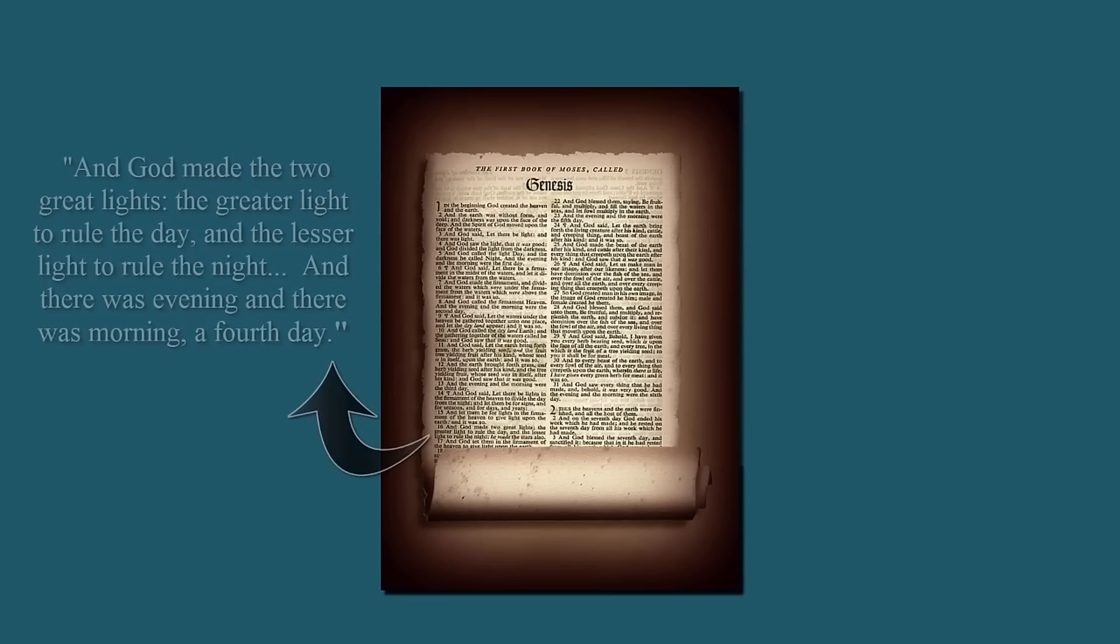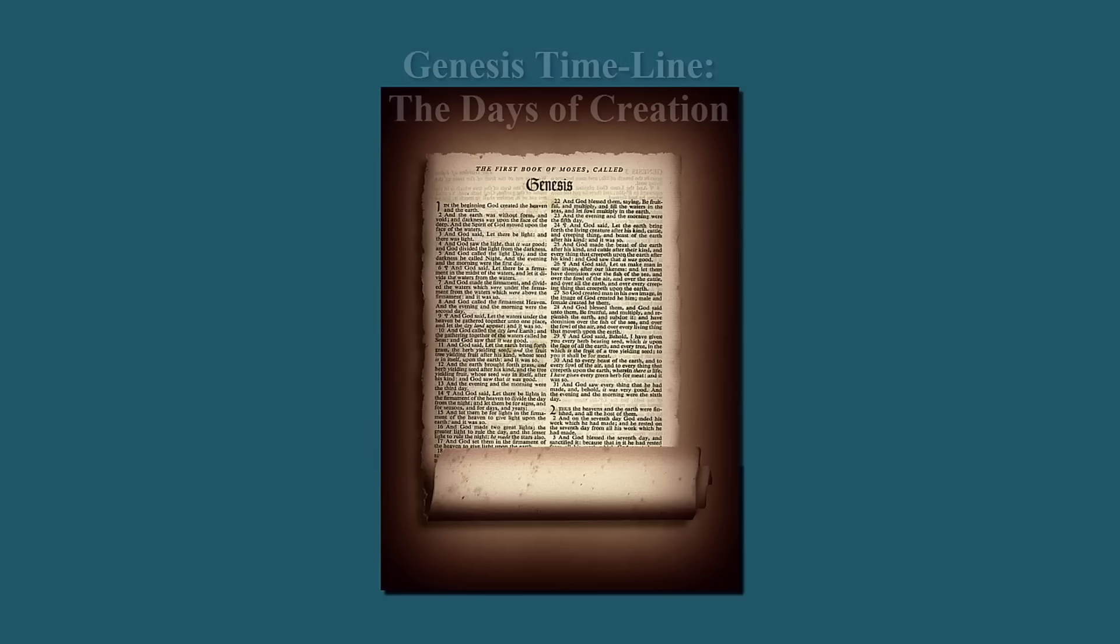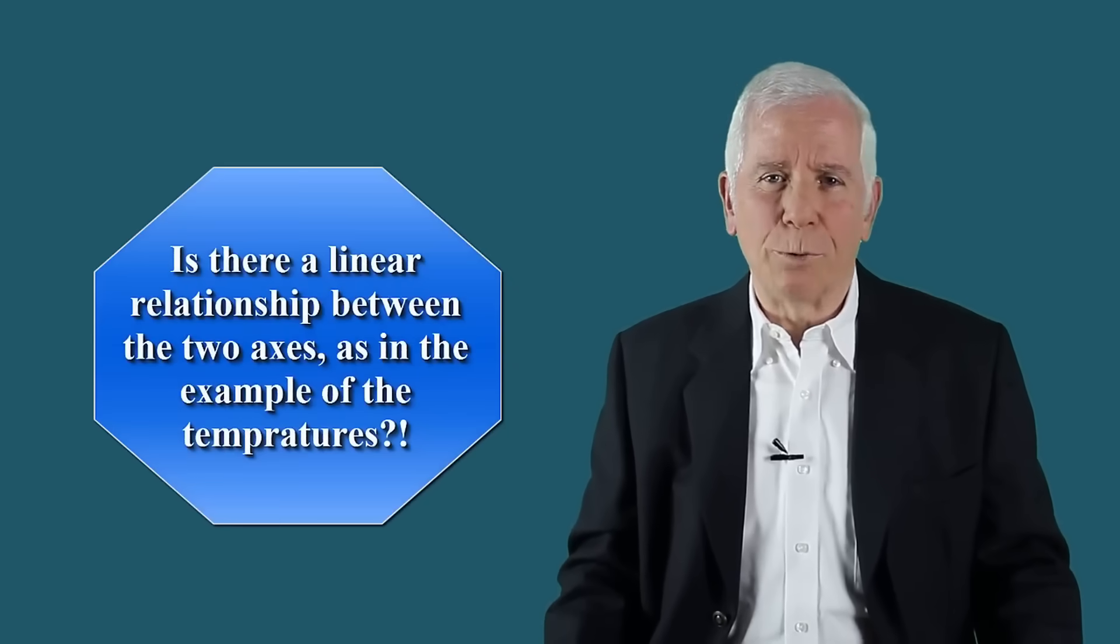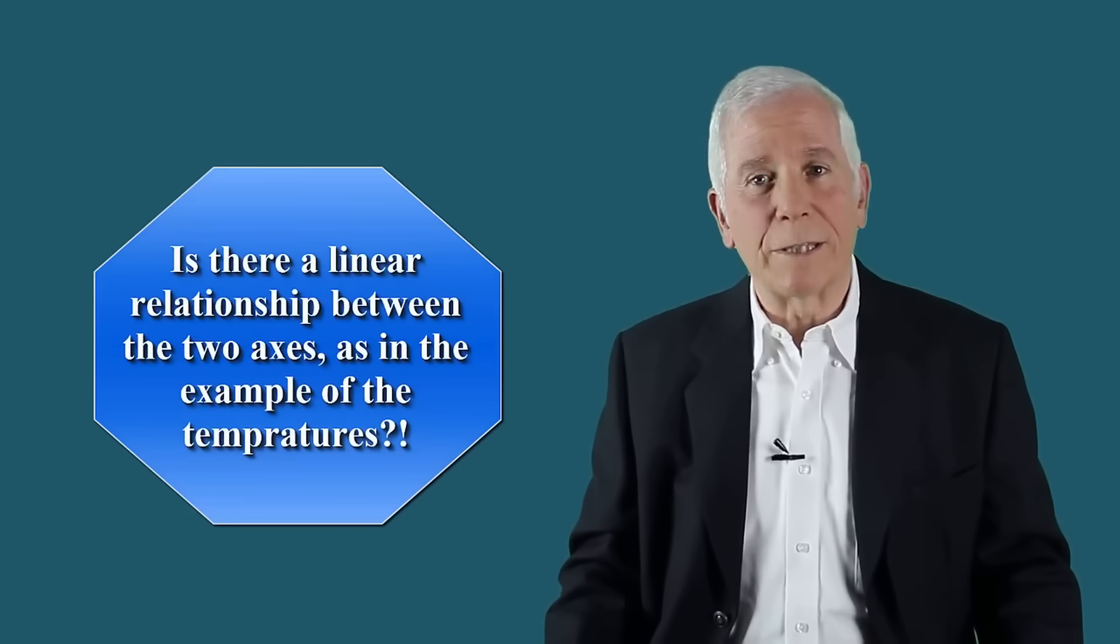To conduct statistical analysis of Genesis creation narrative, we have defined several cosmological events mentioned in Genesis, for example, creation of sun and moon on the fourth day. Events were defined in terms of two timelines. Genesis timeline in terms of days. Scientific timeline in terms of billions of years since the Big Bang 13.8 billion years ago.